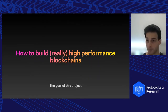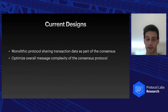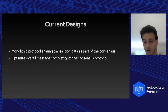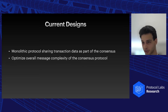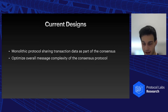This talk is about how to build really high-performance blockchains. We've been trying that for a long time with different techniques, and we believe we have one that works fairly well. Looking at early versions of PBFT, previously LibraBFT, HotStuff, or Tendermint, we realize they're all monolithic protocols that share transaction data as part of the consensus protocol, and we have 30 years of literature telling us how to minimize the overall message complexity of the consensus protocol itself.